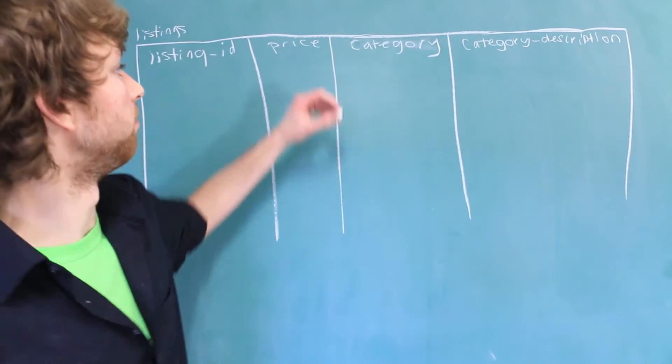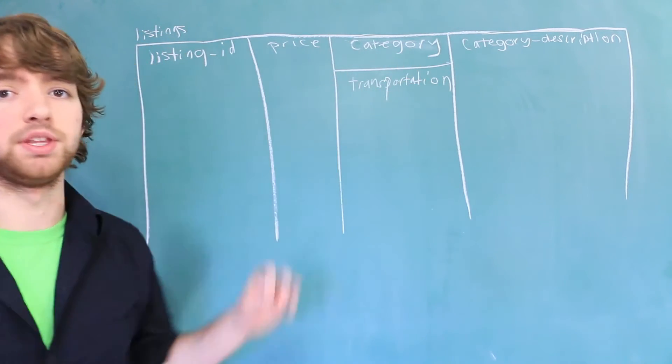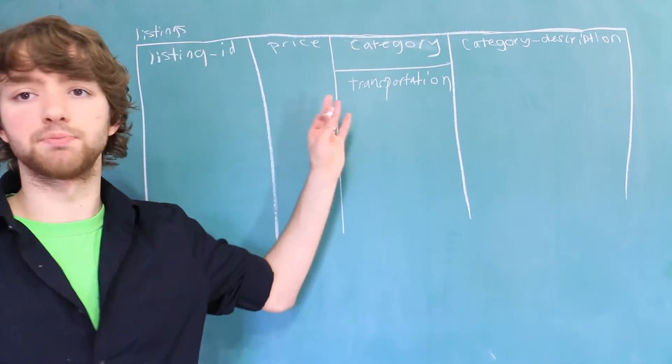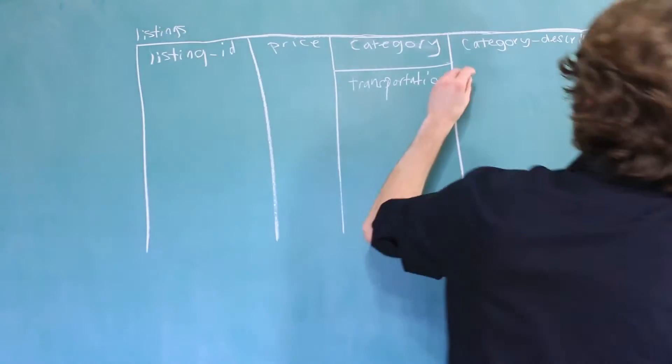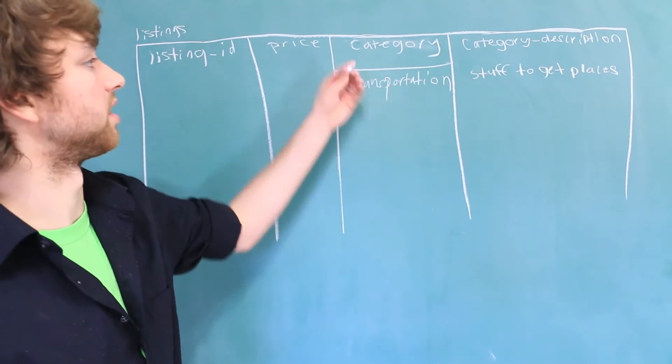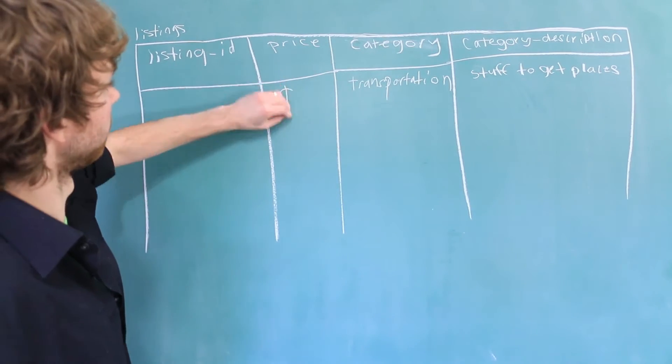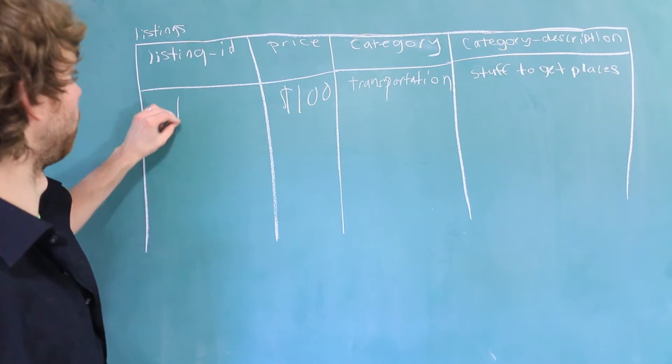So for example, the category might be transportation. And then the description of this category is going to be the same for every transportation. So we could say, stuff to get places. And that describes this category. So we'll add this bike on here. We'll say it's $100. And it has the listing ID of 1.